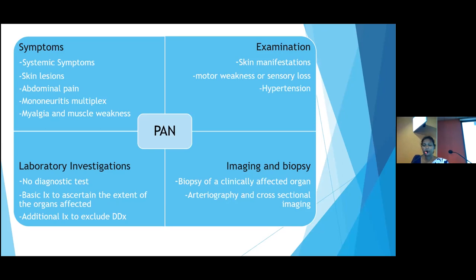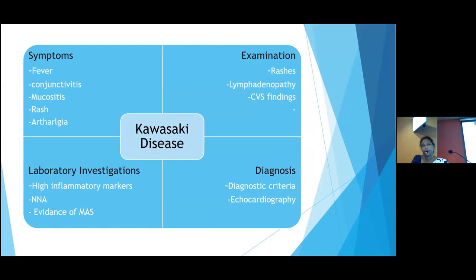Kawasaki disease is the other medium vessel vasculitis entity. Patients can have fever, conjunctivitis, rashes, and arthralgia. Examination findings include rashes and, importantly, coronary artery aneurysms as serious findings of concern. Investigations show high inflammatory markers, thrombocytosis, anemia, and evidence of macrophage activation syndrome depending on disease severity. There are specific diagnostic criteria for Kawasaki disease. The coronary arteries are also affected.